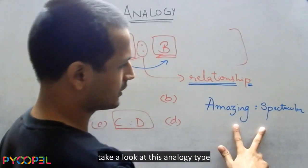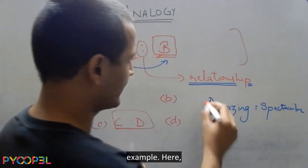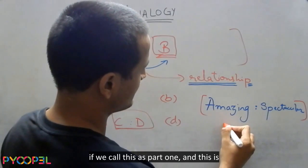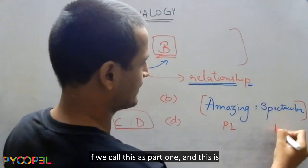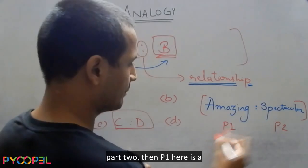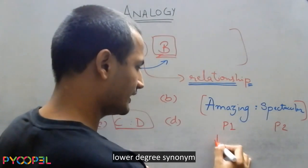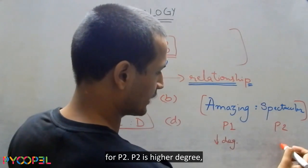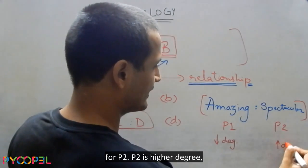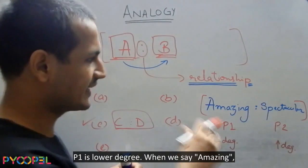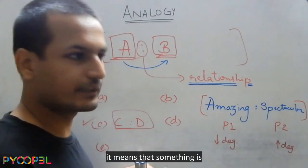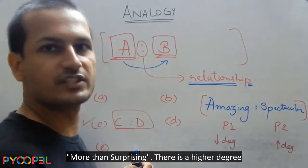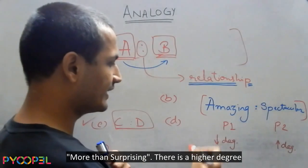Now, take a look at this analogy type example. Here, if we call this as part 1 and this is part 2, then P1 here is a lower degree synonym for P2. P2 is higher degree, P1 is lower degree. We say amazing, when we say amazing, it means that something is surprising, something is more than surprising. There is a higher degree for surprising, amazing.